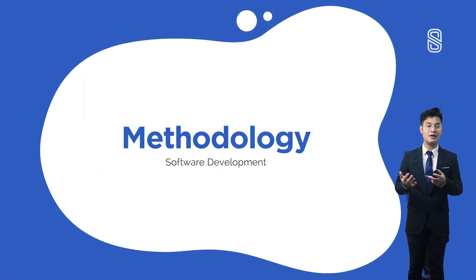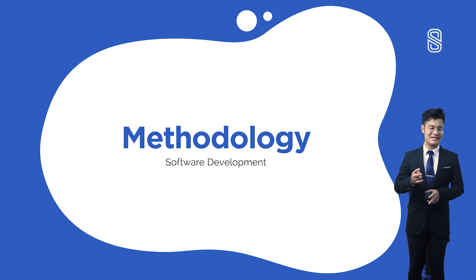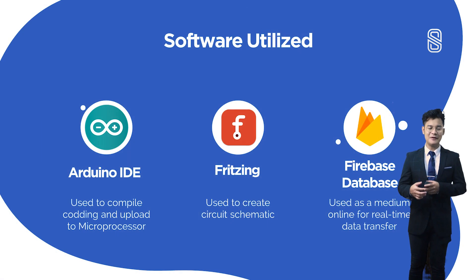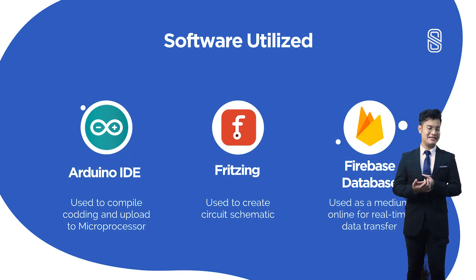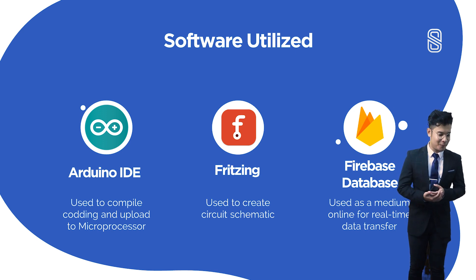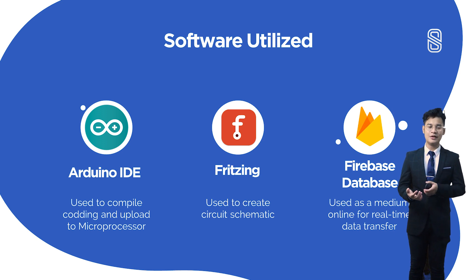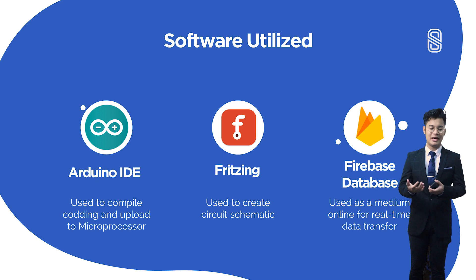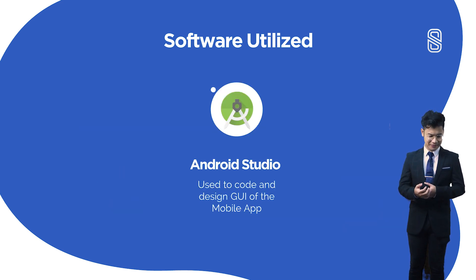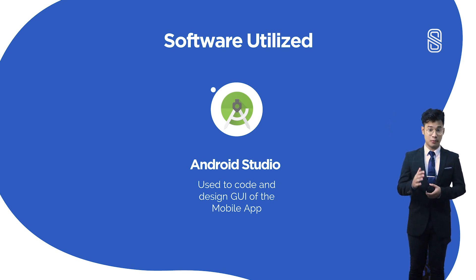Now the last part is the methodology. We have two parts: software development and hardware development. For software, we use Arduino IDE to compile code and upload it to the microprocessor. Second is Fritzing, used to create circuit schematics. Third is Firebase, used as an online medium for real-time data transfer. And last is Android Studio, used to code and design the GUI for the mobile app.